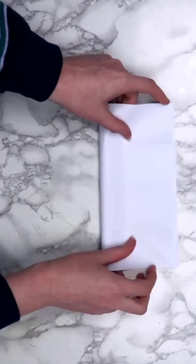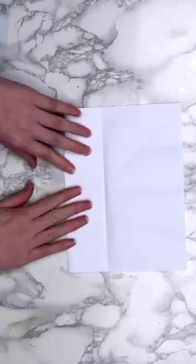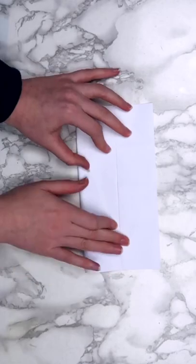Turn your paper around, and fold it back in half. Unfold it, and do the same thing that we did before, folding both edges in to meet the center.